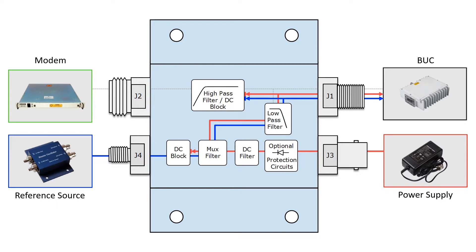For an LNB setup, simply connect the LNB where the buck is at J1. The only difference is that the L-band signal flows in the opposite direction from J1 to J2. Everything else remains the same.